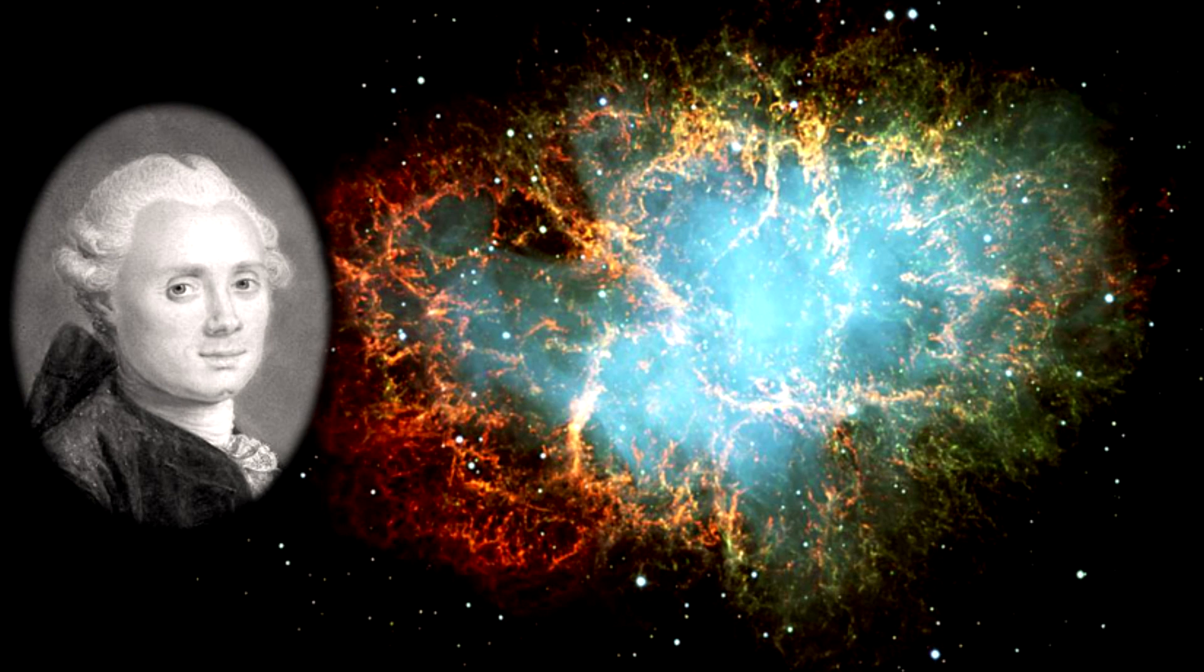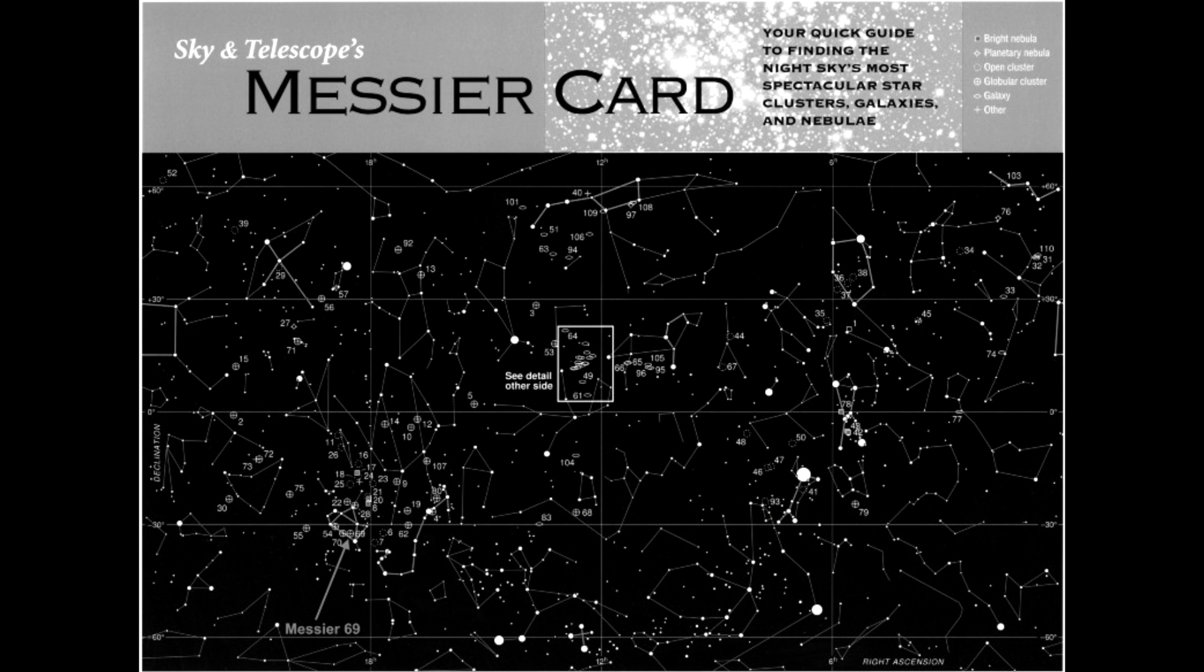And so he decided to distinguish them as immobile objects in the night sky. The resulting catalog, published in 1774 when the astronomer was 44 years old, contains over 100 deep sky objects, including nebulae and galaxies.